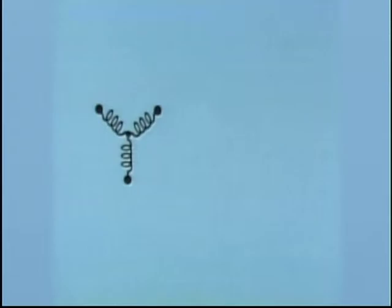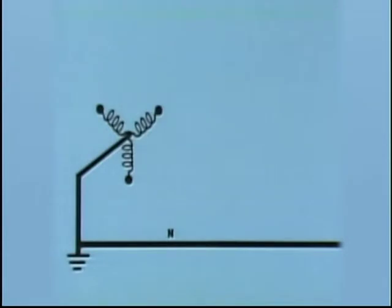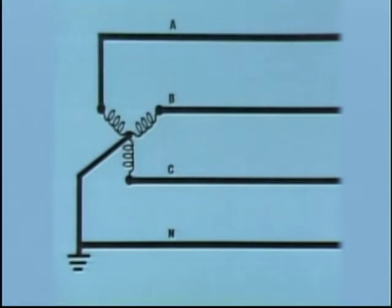Here's an illustration that represents the winding connections for a substation transformer in a Y system. In a Y system, one end of each winding is connected at a common point and typically connected to a grounded system neutral. Each phase of a primary Y distribution system begins at the other end of one winding.